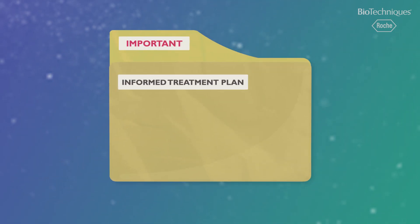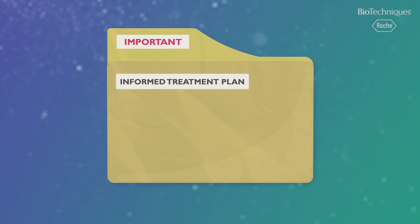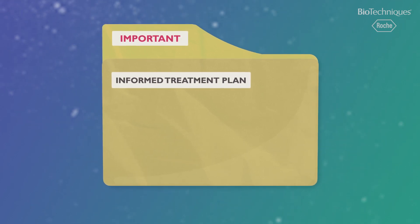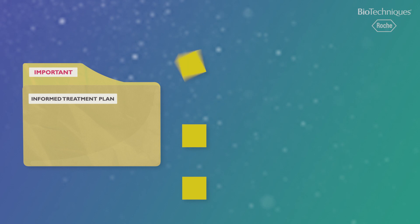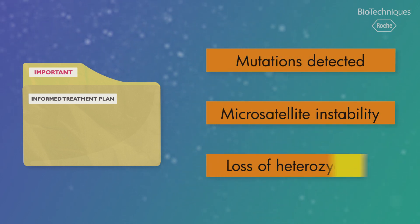CGP identifies many mutations that single marker assays and hotspot panels miss, whilst giving measured, insightful genomic signatures, such as the number of mutations detected, microsatellite instability, and loss of heterozygosity.